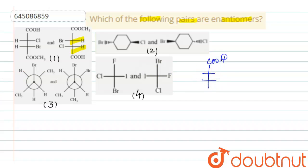We are having the first one here: COOH, Cl, Br, H, H, COOCH3. Now we will check the R-S configuration here.